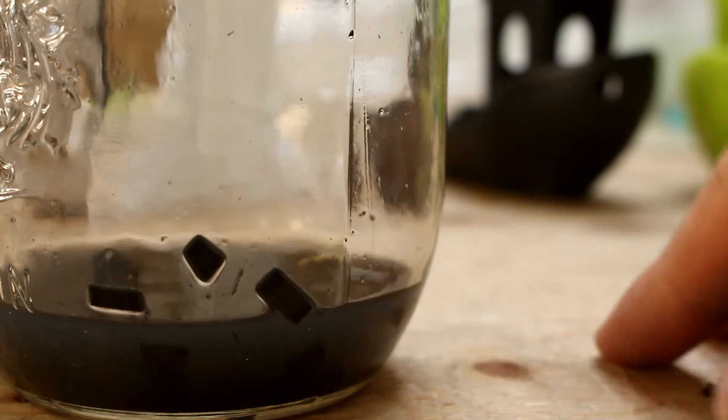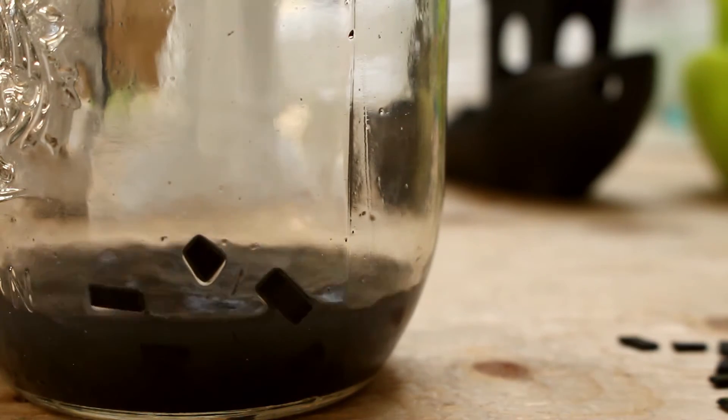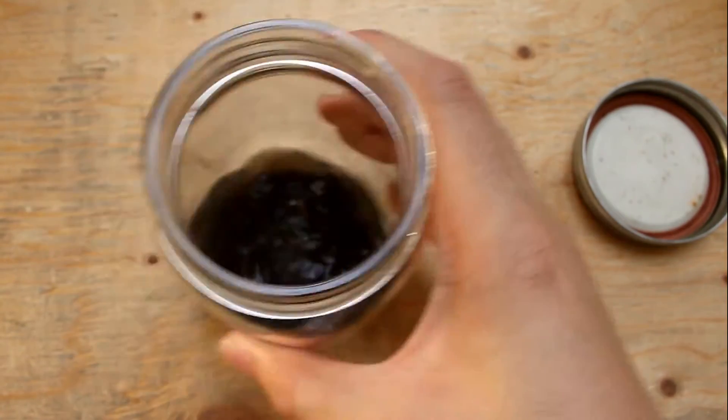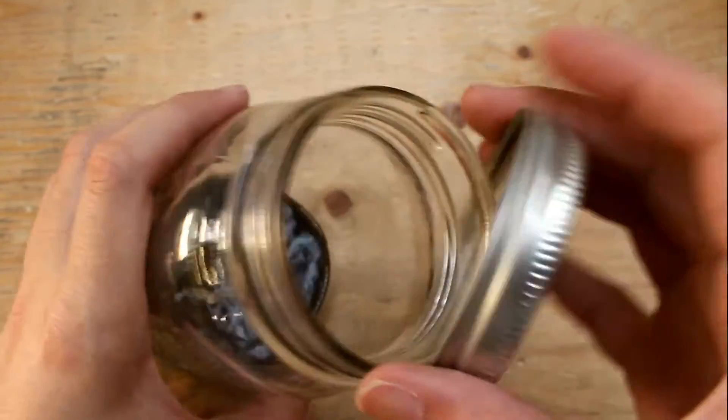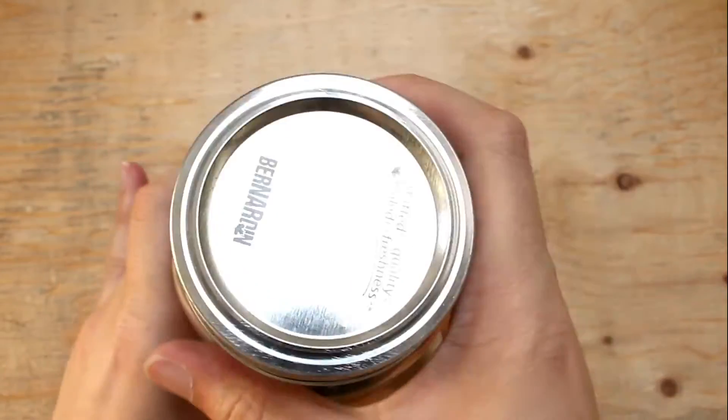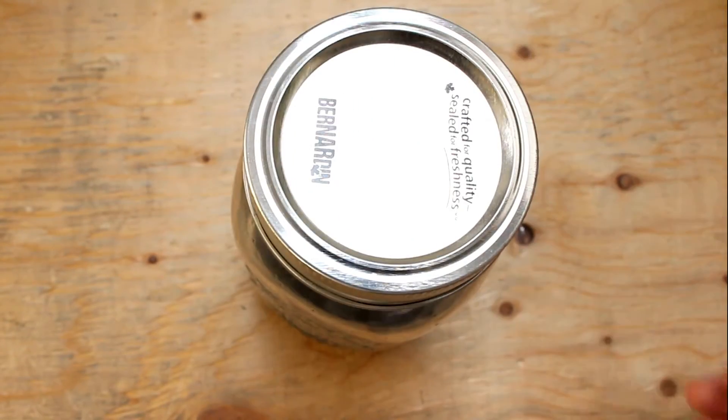Throw in all the ABS that you cut and swirl the contents around. Keep swirling until all the ABS inside the jar dissolves. I can start to smell the chemical fumes so let's close the jar up and then swirl it around. I think you would like to add enough ABS until the sludge is thick but not watery.